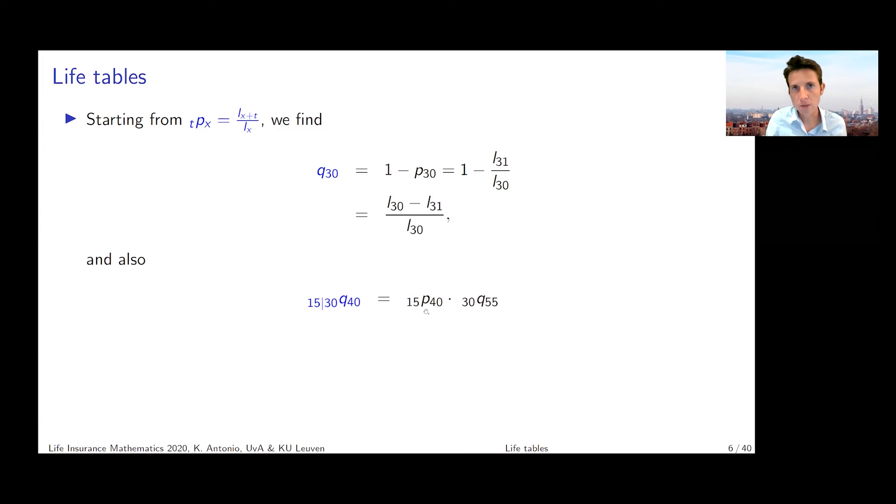We can calculate this deferred mortality probability by multiplying the survival probability with 30q55. If you relate to your l column in your life table, you can re-express the survival probability as the ratio of l55 and l40, and this 30-year mortality probability can be re-expressed accordingly. You massage these expressions and eventually find what you see at the bottom.